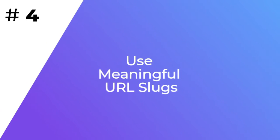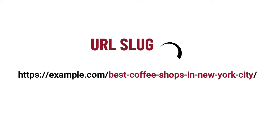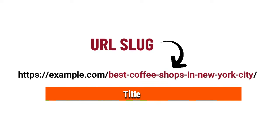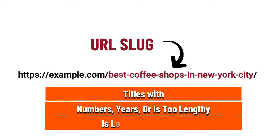WordPress uses an SEO-friendly URL structure, which allows you to create meaningful URLs for your content. The last part of these URLs are called the slug, and WordPress automatically generates those based on the post or page title. However, if your post title contains numbers, years, or it's too lengthy, it could become less user-friendly.